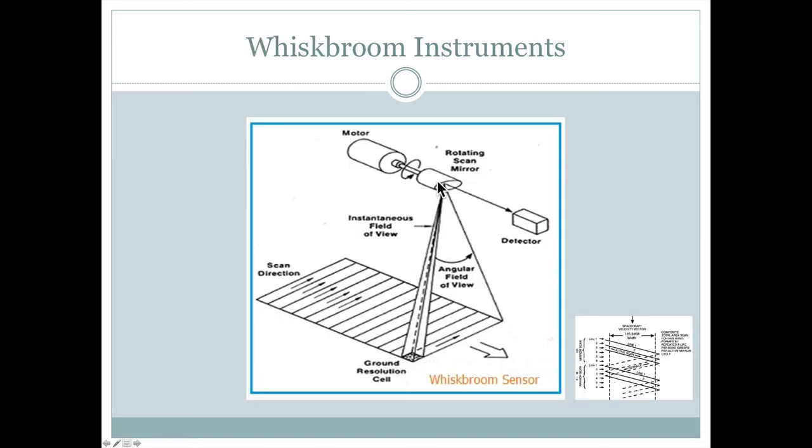By contrast, a whisk broom instrument is one that has some sort of rotating scanner, perhaps a mirror that's moving from side to side. So as this satellite moves across here, it's not collecting this entire row at the same time. This instrument is rotating. And as it rotates, it might start collecting data here, collect it up to here.